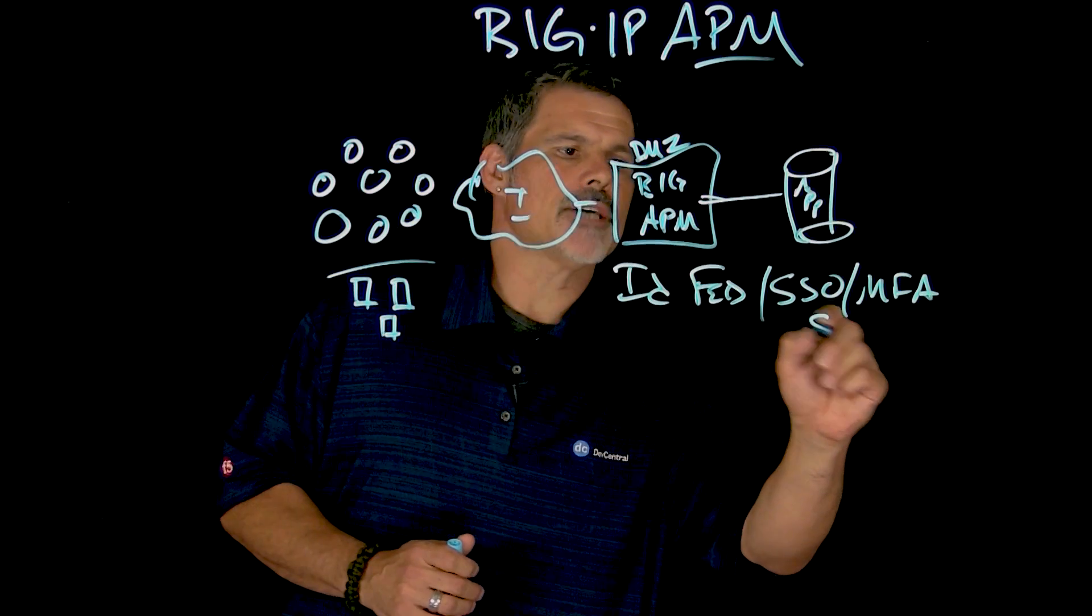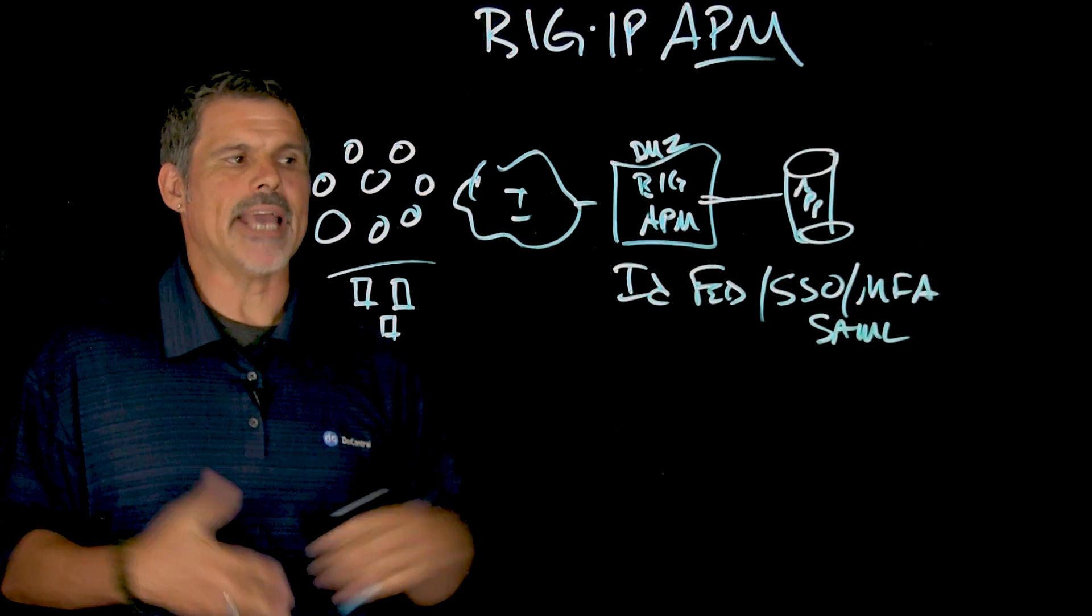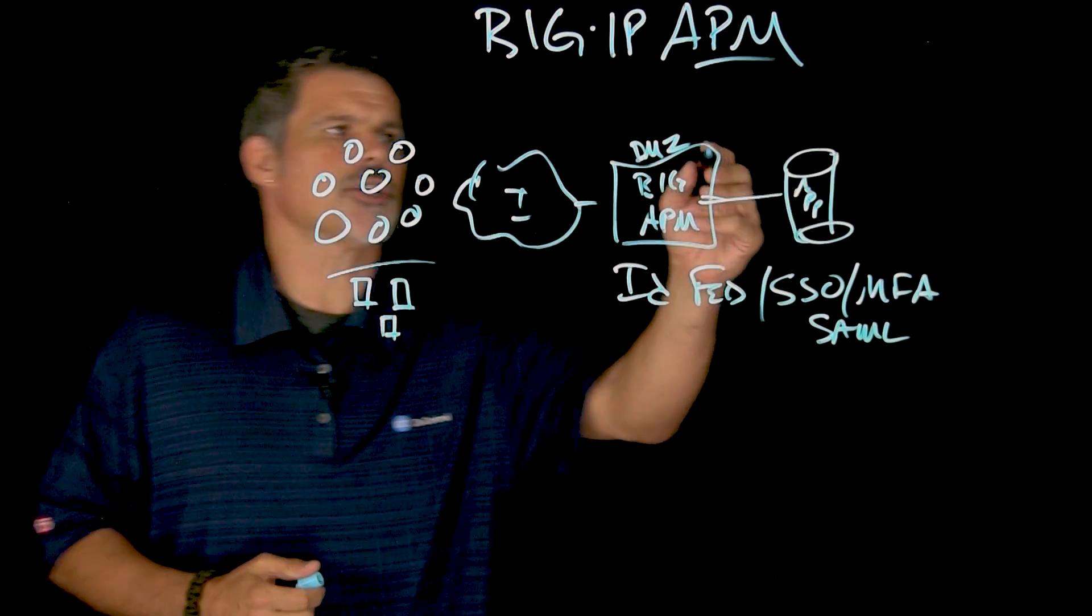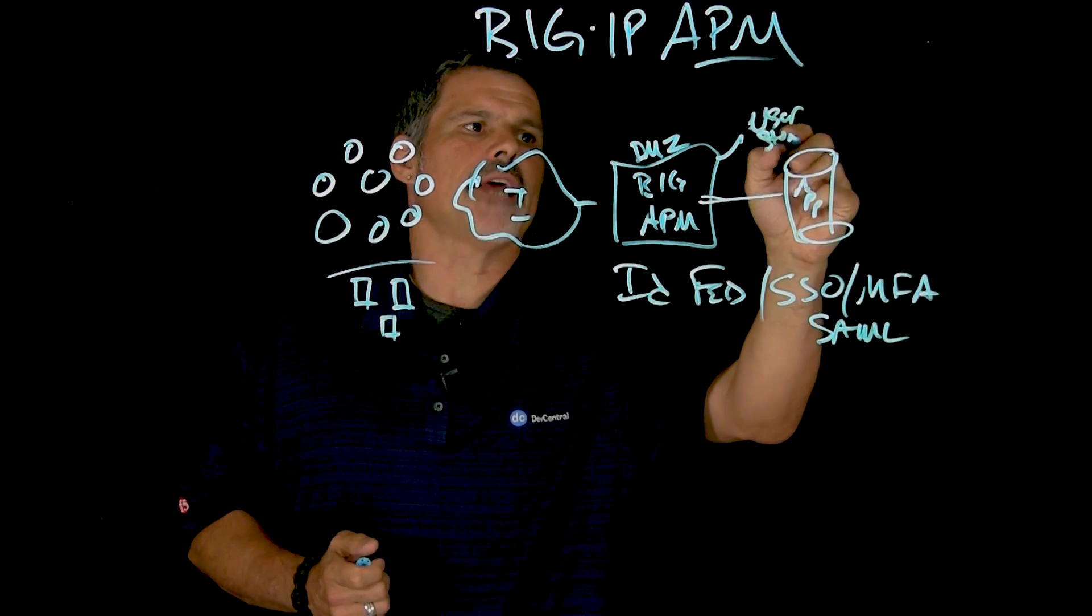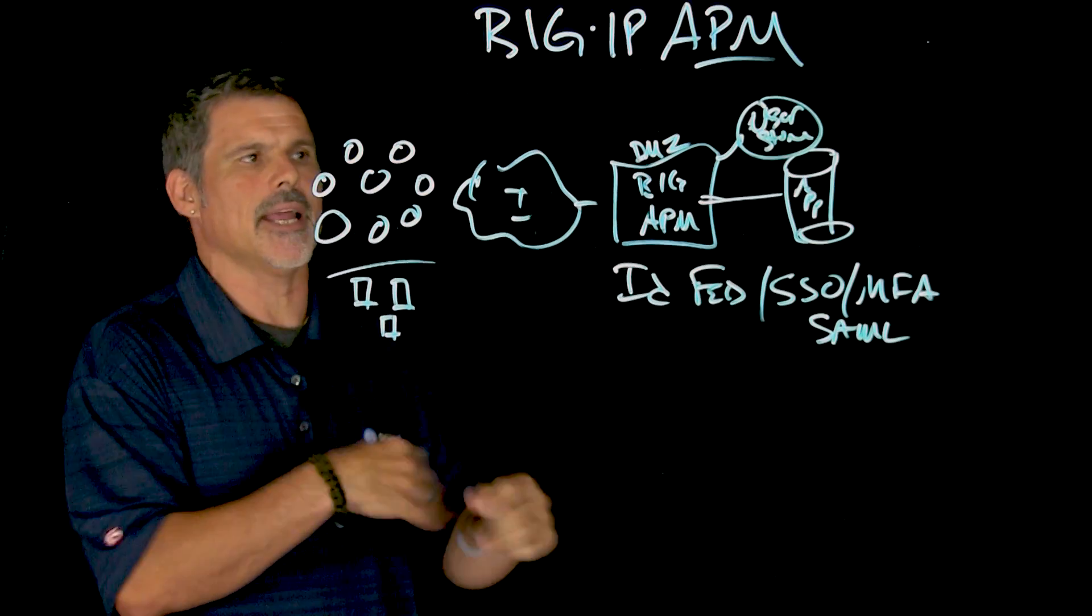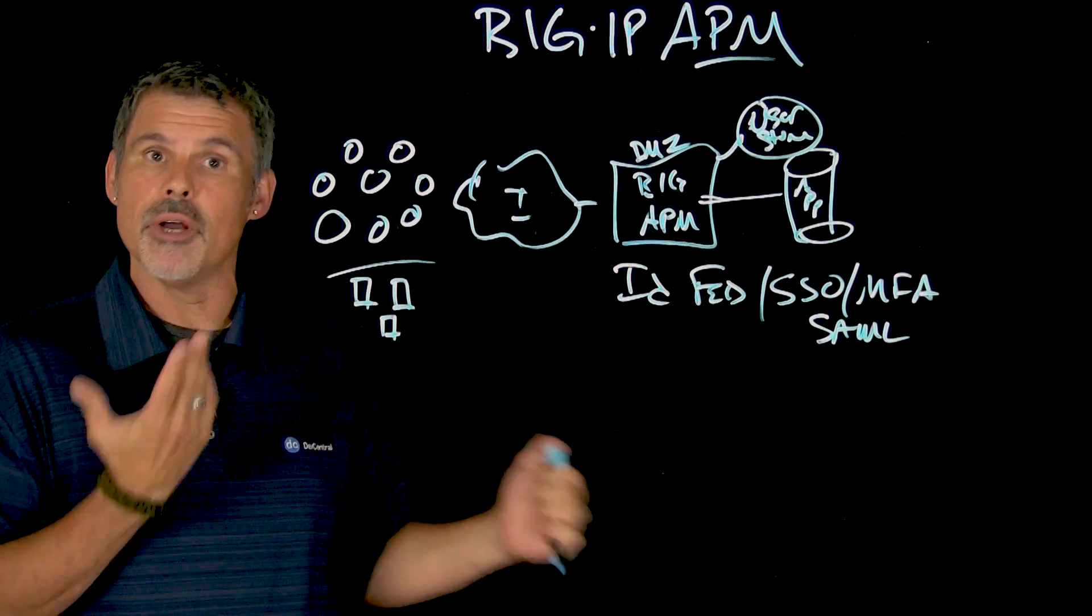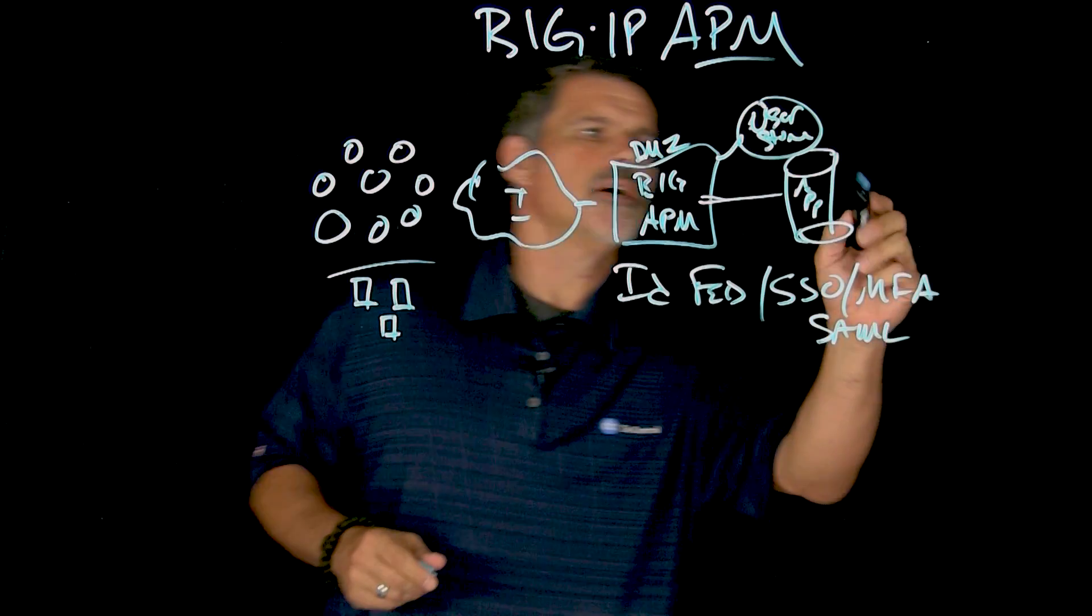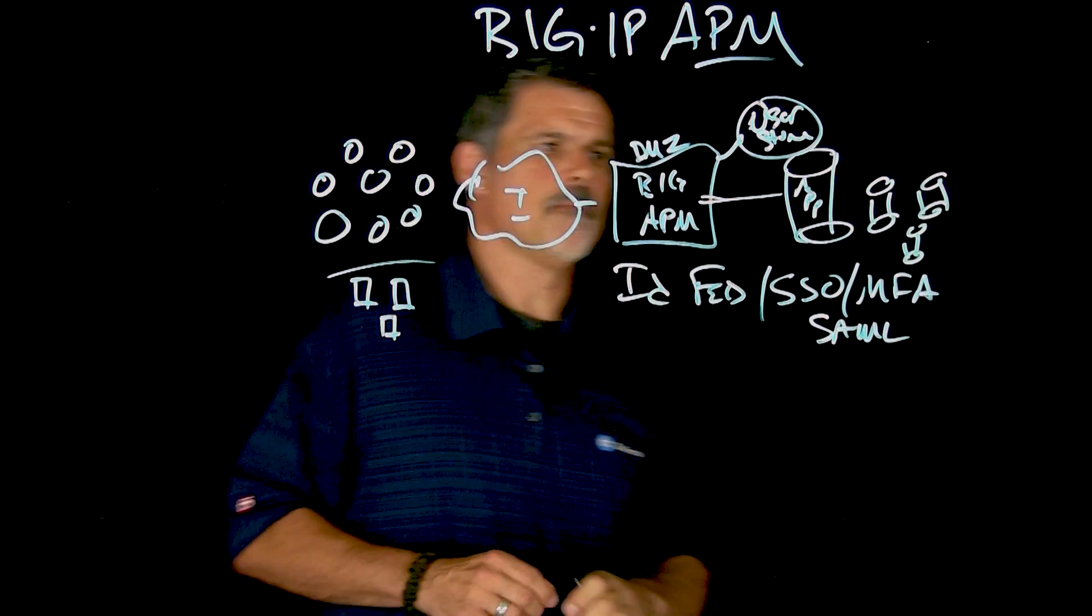And also supports things like SAML as an identity provider, or a service provider. So in this situation, Big IP Access Policy Manager will query your user database to determine if you are who you say you are when you're authenticated, and if so, provides access to certain resources. It also, with that single initial log-on, providing single sign-on to multiple applications on the back end, if necessary.